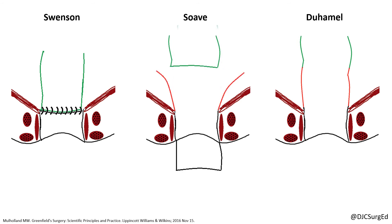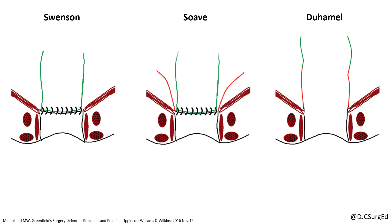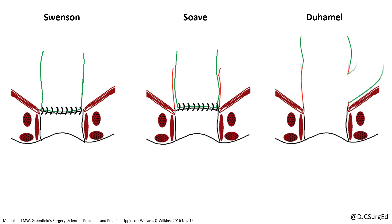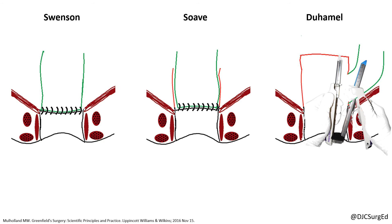by performing a submucosal endorectal dissection and placing the pull-through ganglionic segment within a cuff of aganglionic muscle. The Duhamel procedure joins normal colon with the aganglionic rectum to create a new lumen, which is aganglionic anteriorly and normally innervated posteriorly.